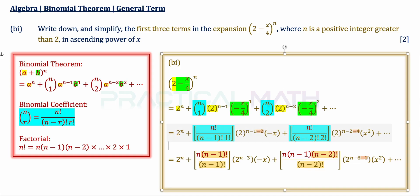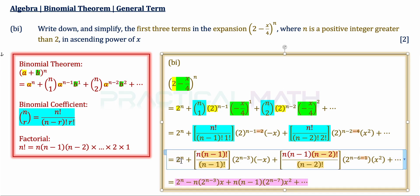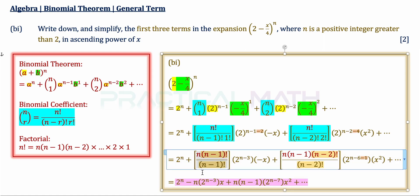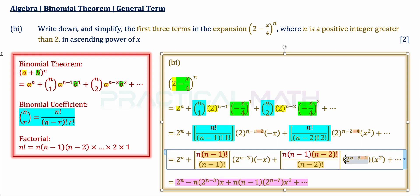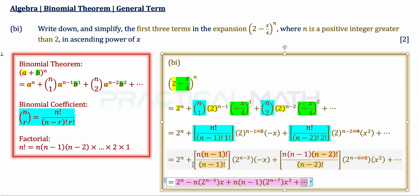Simplifying fully: the first term is 2^n, the second term is -n·2^(n-3)·x, and the third term is n(n-1)·2^(n-7)·x². Plus higher order terms indicated by the triple dot. It is worth noting that to simplify the answers, we must combine all the bases of 2. That's the answer for B Part 1.